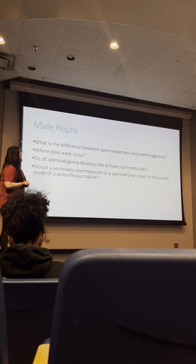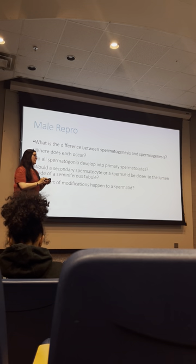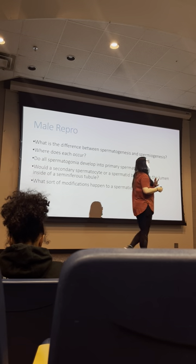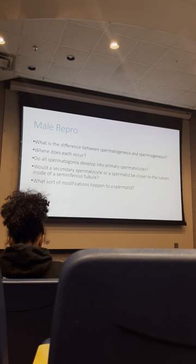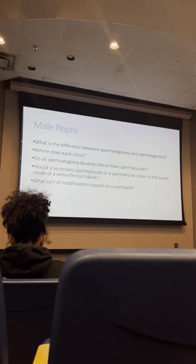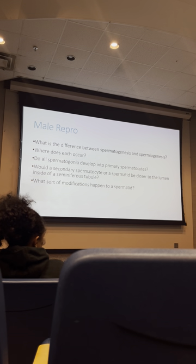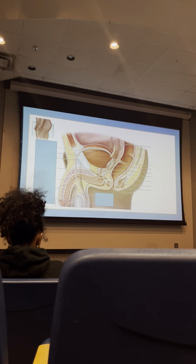Not all spermatogonia commit to becoming primary spermatocytes — some must stay to replenish the stem cell population. This is asymmetrical mitotic division. Specifically, type B spermatogonia commit to becoming spermatocytes, while type A spermatogonia stay to replenish the population. When a spermatid is formed, it must go through modifications: elongation, development of the acrosome cap for digestion, development of a flagella for motility, and shedding of cytoplasm.